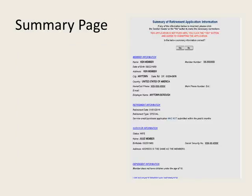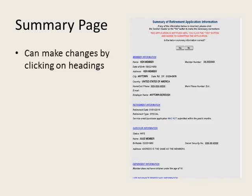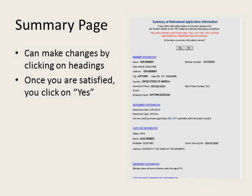At this point the MBOS system will show you a summary screen of everything that you have entered. You may go back and make changes by clicking on the headings. Once you are satisfied, you will click 'Yes.' A box will come up asking if you are sure you want to submit this retirement application, and you will click 'Yes' at that time.